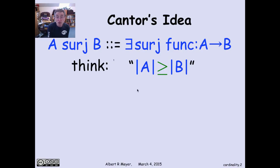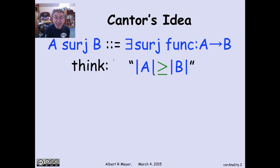So we're going to think of A surge B as saying A is as big as B. For finite sets, it's literally true that A surge B if and only if the size of A is greater or equal to the size of B. Now, the notion of actual size or cardinality of infinite sets is kind of a no-no — there are abstract cardinal numbers, but they're technical and not very useful. We will never actually talk about the cardinality of an infinite set, but we will compare them using surge.